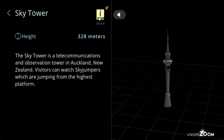Sky Tower, height: 328 meters. The Sky Tower is a telecommunications and observation tower in Auckland, New Zealand. Visitors can watch sky jumpers which are jumping from the highest platform.